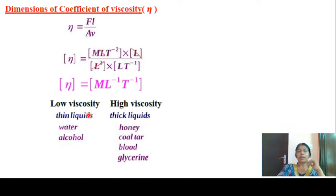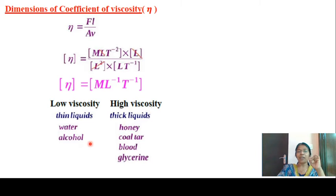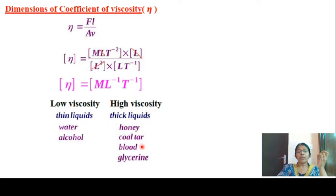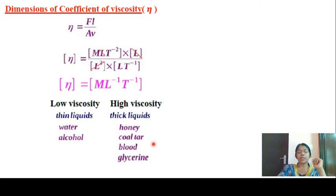Low viscosity fluids are thin liquids such as water, alcohol, and spirit — sanitizer is also very thin. High viscosity fluids are thick liquids such as honey, coal tar, blood, and glycerin.